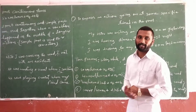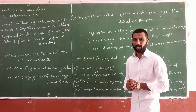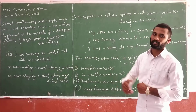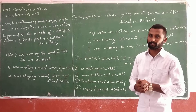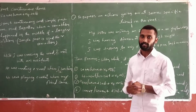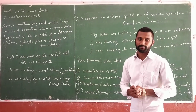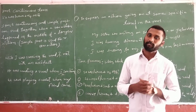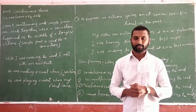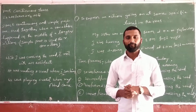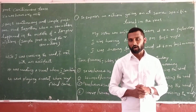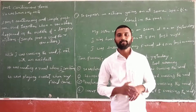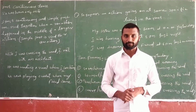In this video, I would like to explain about past continuous tense. The structure is: subject plus was/were plus V4 plus object. V4 is equal to V1 plus 'ing'.